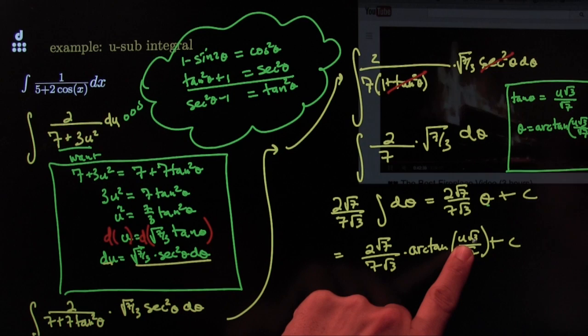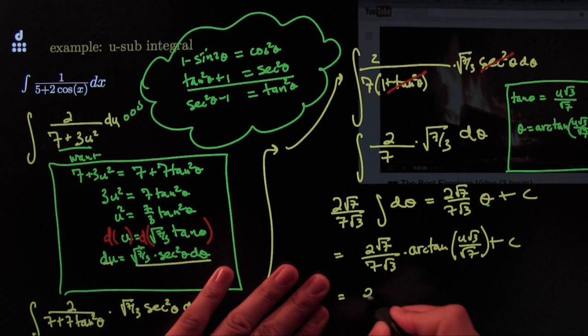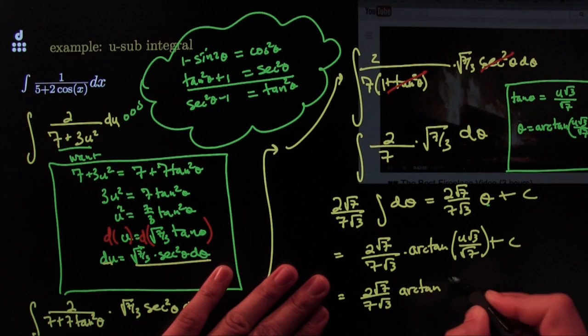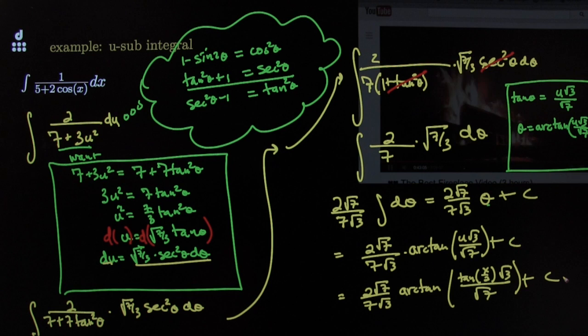Now I substitute back for u, recalling that u equals tangent of x over 2 from the Weierstrass substitution. The final answer is 2 times square root of 7 over (7 times square root of 3) times arctan of [tangent(x/2) times square root of 3 over square root of 7] plus C. Maybe you can clean it up a little, but simplifying is for the birds — I'm way too sexy to simplify.